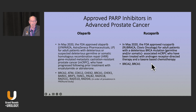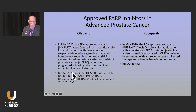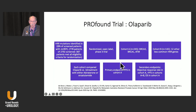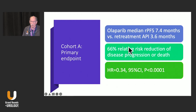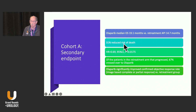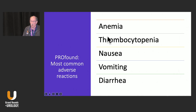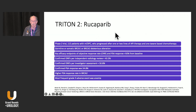We have olaparib and rucaparib available now. With olaparib — in metastatic castrate-resistant patients — a broader group of genetic defects qualifies. With rucaparib it's just BRCA mutations, and patients must have had prior chemotherapy or be unable to take it. Germline and somatic testing is key. Looking at the trial data, olaparib showed a significant reduction in radiographic progression and an overall survival advantage — most notably a 31% reduction in risk of death in the cohort with BRCA1 and 2 mutations, who did the best. The key side effect to watch is anemia, along with thrombocytopenia, nausea, vomiting, and diarrhea.